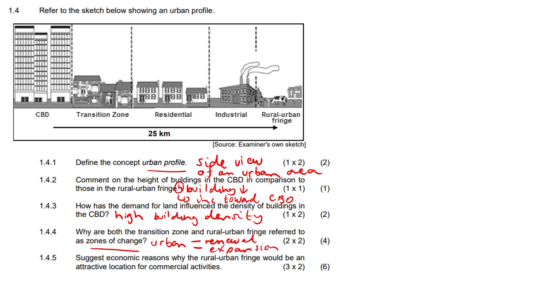So 1.4.5 suggest economic reasons why the rural urban fringe would be an attractive location for commercial activities. Why? Tell us why, why is it so attractive? Just like you. It's going to be three times two here, so you got to give me three proper answers.